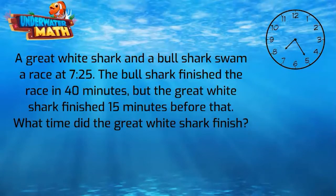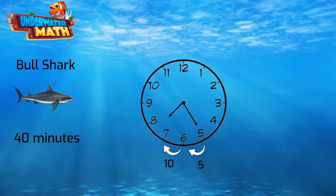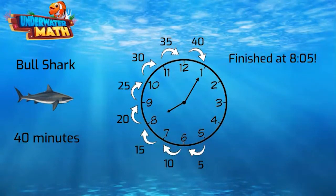Let's use the clock to help us. The race started at 7:25 and the bull shark swam it in 40 minutes. We can count up 40 minutes on the clock using 5 minute jumps. That gets us to 5 minutes past the next hour. So the bull shark finished at 8:05.